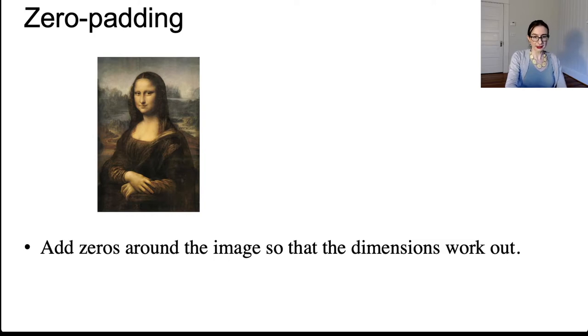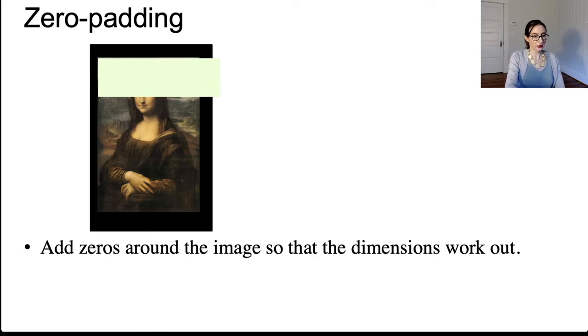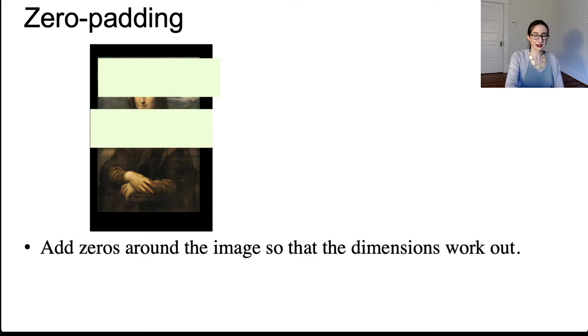Now, zero padding is important because sometimes the mathematics doesn't work out, and you could actually crash your code. So if you're trying to do a convolution with a specific stride, you could actually run off the end of the image, and that's not good. So what people often do is they zero pad the image. You could actually put zeros all around the image so that the math actually works out and the code won't crash.